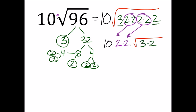This is expanded. What I want to do is now simplify these. So I've got 10 times 2 times 2, which is 40, times the square root of 3 times 2, which is 6.